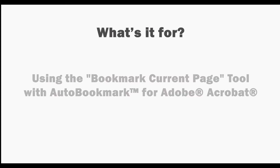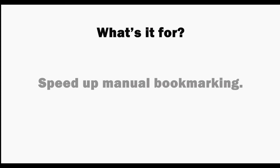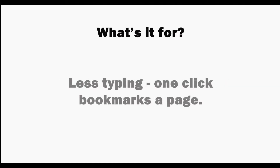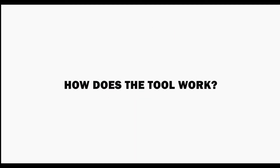In this video we'll look at how to use the Bookmark Current Page tool in the Auto Bookmark plugin for Adobe Acrobat. Use this tool to speed up manual bookmarking by working with a list of frequently used bookmark titles. This means there's less typing as one click bookmarks a page. Let's take a look at how this tool works.